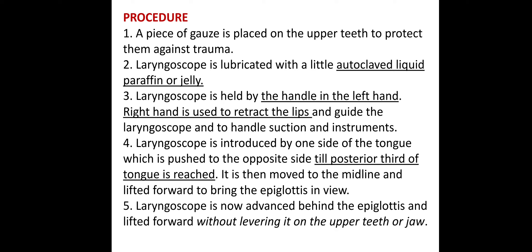For the procedure, a piece of gauze is placed on the upper teeth to protect them against trauma. The laryngoscope is lubricated with autoclaved liquid paraffin or jelly. It is held by the handle in the left hand. The right hand is used to retract the lips, guide the laryngoscope, and to handle suction and instruments. The laryngoscope is introduced to one side of the tongue, which is pushed to the opposite side until the posterior third of the tongue is reached.